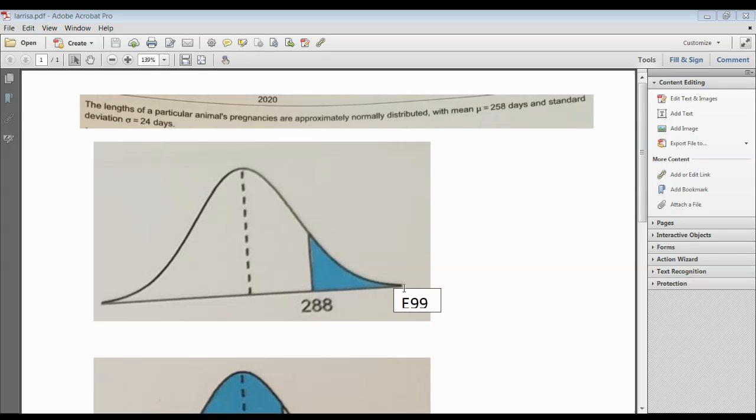Now when you're going all the way to as far as you can go to the right, we call that infinity. There is no key on the calculator that's infinity. What we do is we use E99, the E stands for the number 10 followed by 99 zeros. It's a huge number.